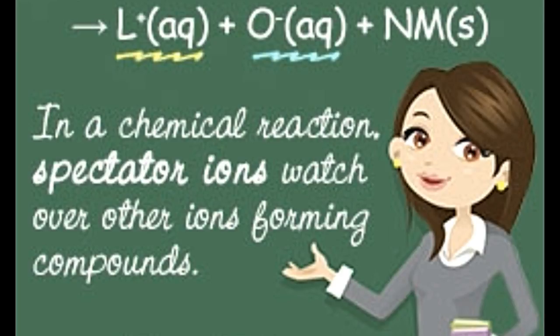Step 1: Consider the complete ionic equation in which sodium chloride reacts with copper sulfate. The products are copper chloride and sodium sulfate: 2NaCl (aq) + CuSO₄ (aq) → CuCl₂ (s) + Na₂SO₄ (aq). Step 2: The complete ionic equation is: 2Na⁺ (aq) + 2Cl⁻ (aq) + Cu²⁺ (aq) + SO₄²⁻ (aq) → CuCl₂ (s) + 2Na⁺ (aq) + SO₄²⁻ (aq). The spectator ions in this equation are Na⁺ and SO₄²⁻, as they remain unaltered on both sides.